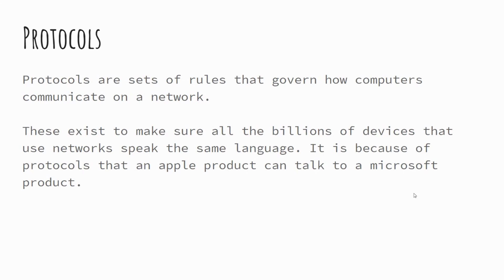Computers are the same way — they have different rules that exist for different purposes, whether it's sending emails, uploading files, websites, and so forth. They have these agreed rules so that every device from every manufacturer can communicate with each other in the same way. This is why when you go to a website it appears exactly the same on an Apple product as on a Microsoft or Asus product. These rules exist to enable a standard method of communication.